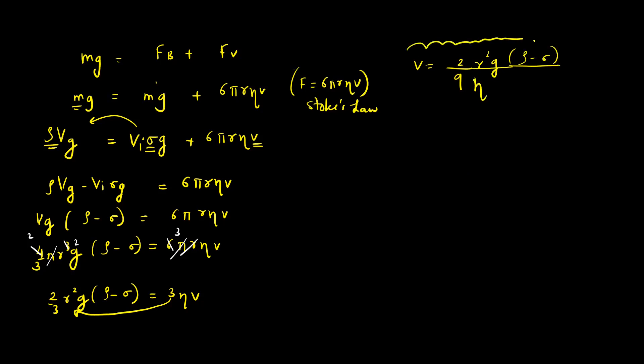This is the formula for terminal velocity. A logical fact: you can see that you have rho minus sigma. This means that rho is bigger than sigma, that means body density is greater than liquid density.